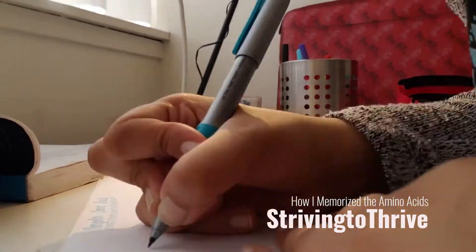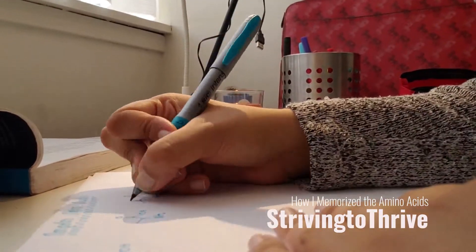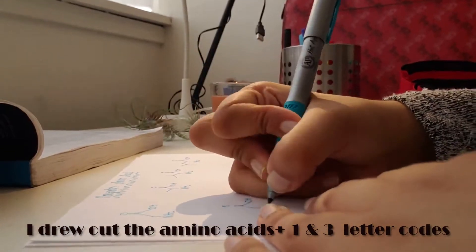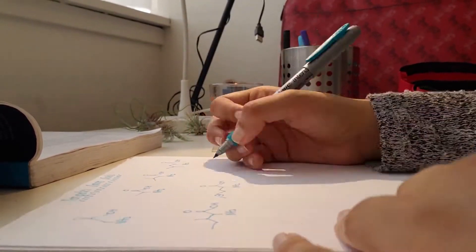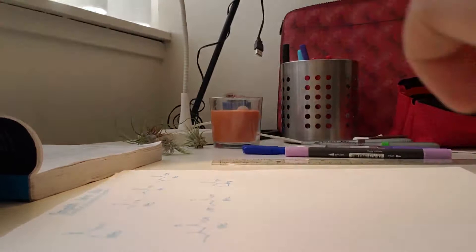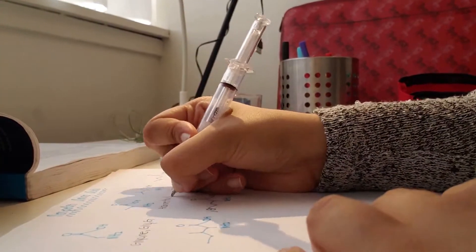Hi everyone! I was able to retain the amino acid structures pretty well using this method. I memorized the amino acids by writing out the structures and names, including the one and three letter codes, on a piece of paper.